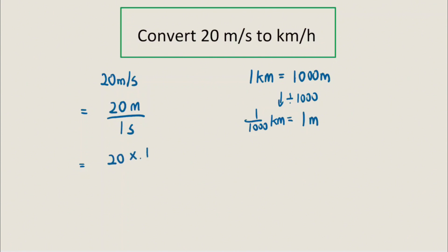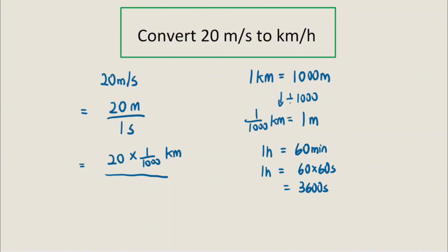So we convert the 20 meters to kilometers. Next, we convert 1 second to hours. We know that 1 hour is 60 minutes, and 60 minutes is 60 times 60 seconds, which equals 3,600 seconds. Dividing both sides by 3,600, we get 1 second equals 1/3,600 hours.